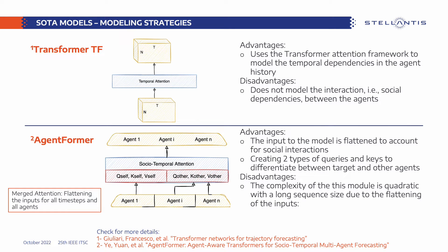Recently, the AgentFormer paper introduced a transformer model for spatial-temporal behavior modeling. In their model, the dependency between all agents at all time steps is learned, so an agent I at time step T can influence another agent J at another time step T'. They propose to flatten the input of the attention module to take input states of all agents at all time steps. However, the complexity of an attention module is quadratic with respect to input length, so flattening the inputs induces very high model complexity, especially with a large number of agents.